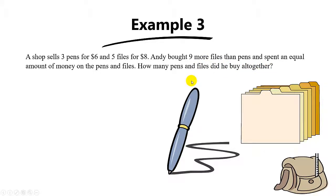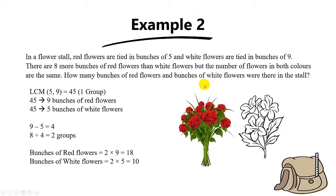First of all, let's compare the difference between this example and the previous example. In the previous example, you are given that the number of flowers in both colors are the same. When you are given this keyword, you have to find a common multiple of 5 and 9.